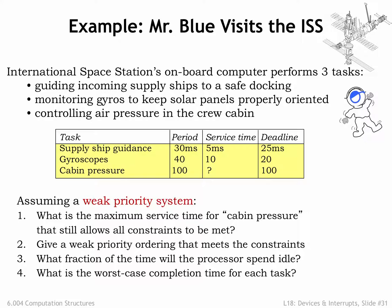We'll first analyze the system assuming it's using a weak priority system. First question: what is the maximum service time for the cabin pressure task that still allows all constraints to be met? The SSG task has a maximum allowable latency of 20ms — its service routine must start execution within 20ms to meet its 25ms deadline. The GTASK has a maximum allowable latency of 10ms to meet its deadline, so no other handler can take longer than 10ms to run, or the GTASK will miss its deadline.